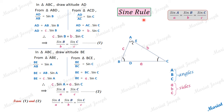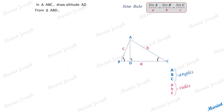In any triangle ABC, sin A / a = sin B / b = sin C / c. This is called the sine rule — a very useful rule. Capital A, B, C are the angles, and small a, b, c are the sides. Now let's derive another relation.